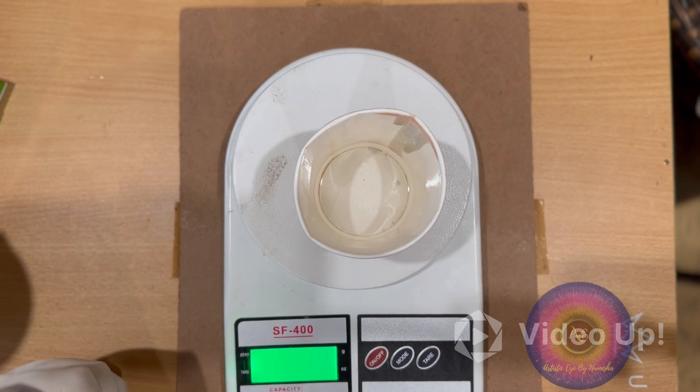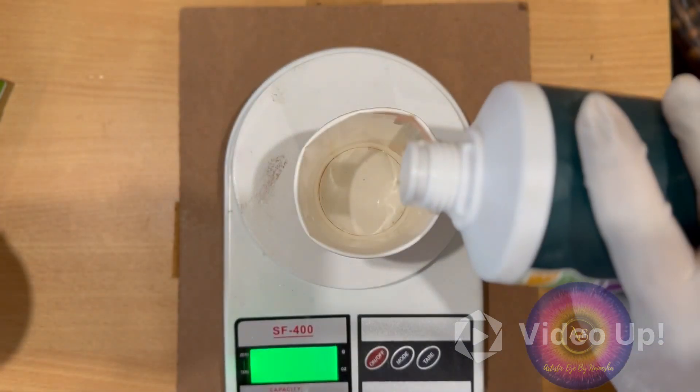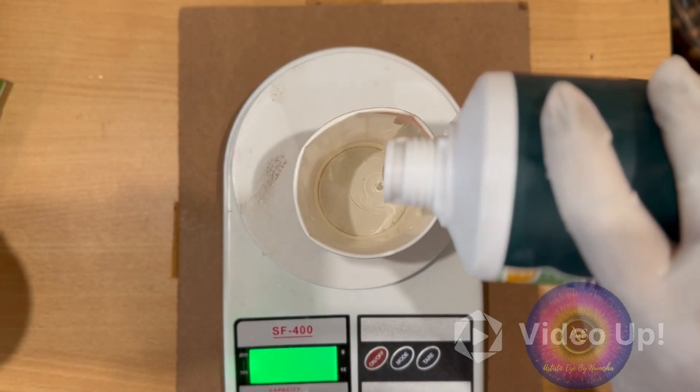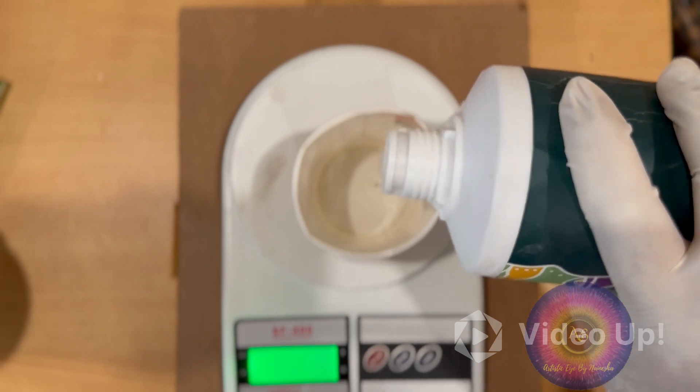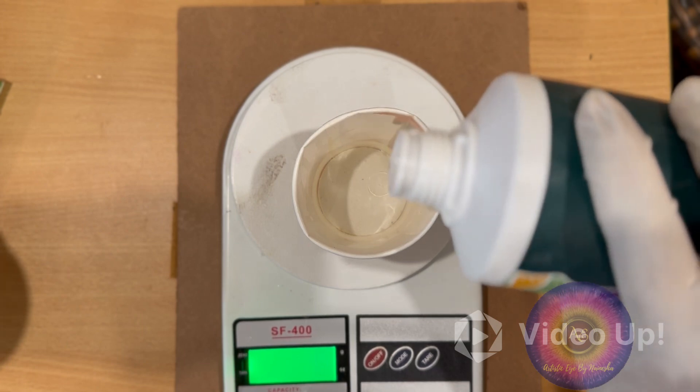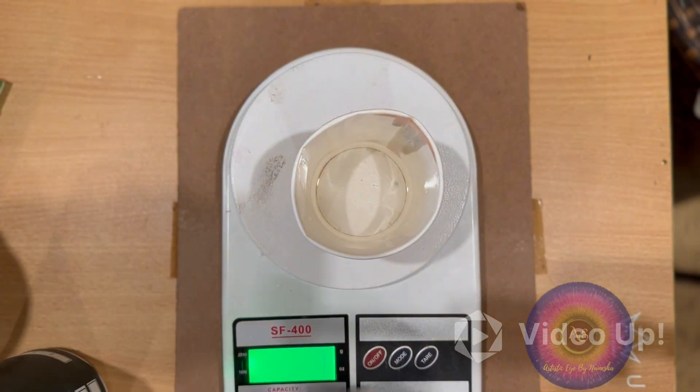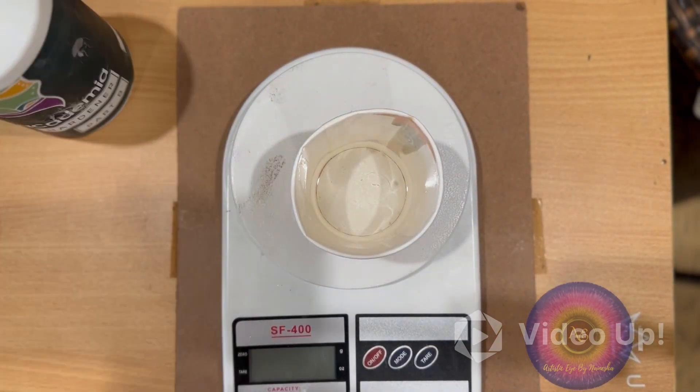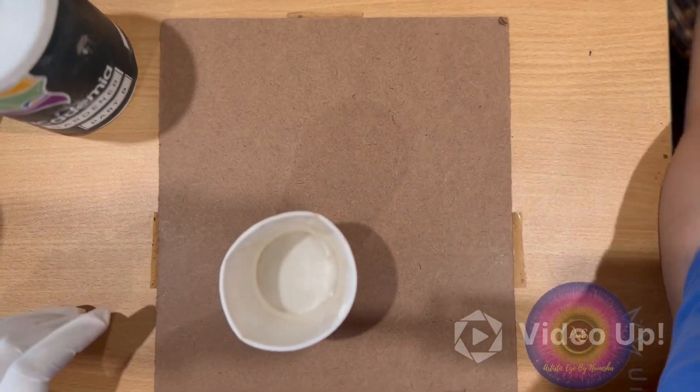Before doing all this, please make sure you're wearing your gloves and mask, and to protect your clothes you're wearing an apron, because I am. Now that we have poured the resin and hardener, I'm going to mix it for a good one minute.